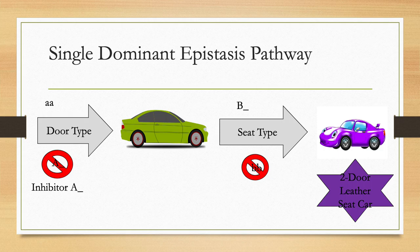If we had parents that donated a big B gene, then we would have our two-door cars with leather seats. If the parents donate a little B gene, then the car would have cloth seats, which is not what we want. These cars will be in the middle of the pathway.